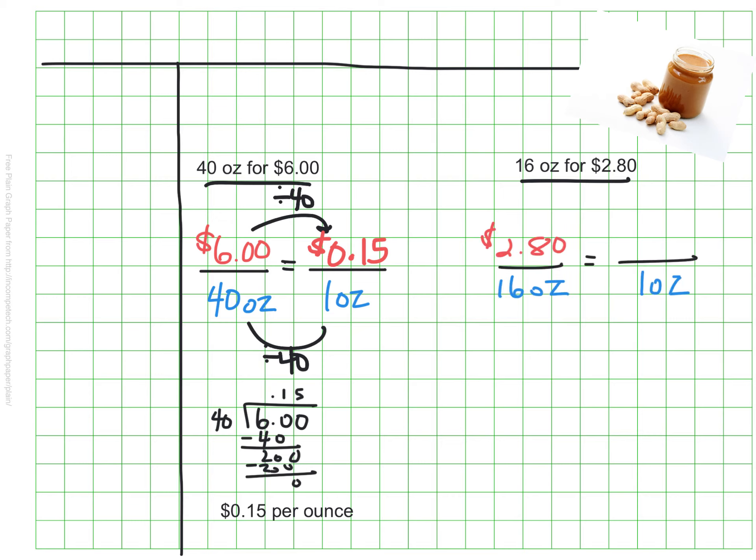I've set this up in a similar way. And in this case, I need to scale down by dividing my 16 ounces by 16 to be able to find the price of just one of those ounces. So again, that means I need to divide my $2.80 by 16. So I'll go ahead and set that up.